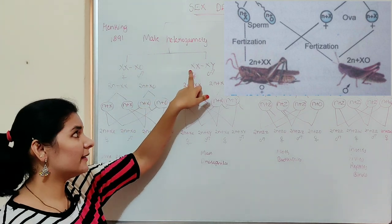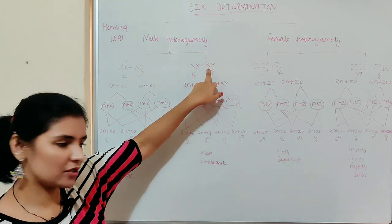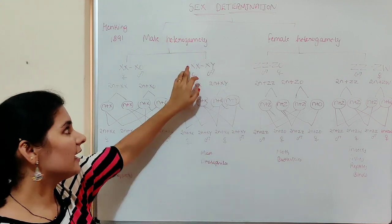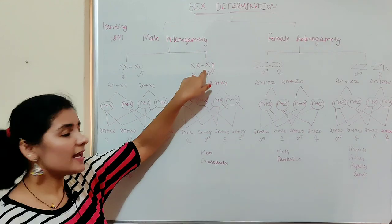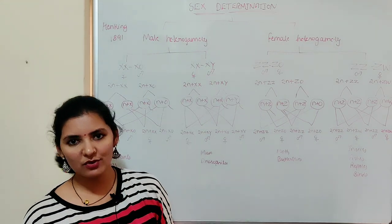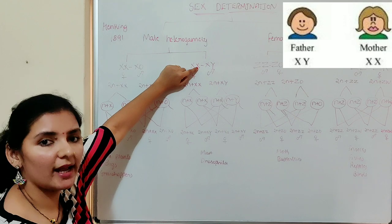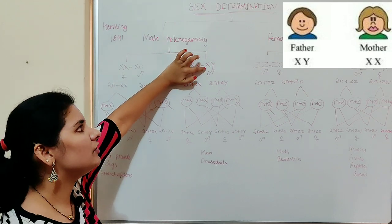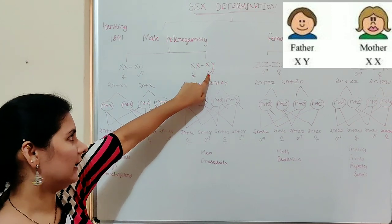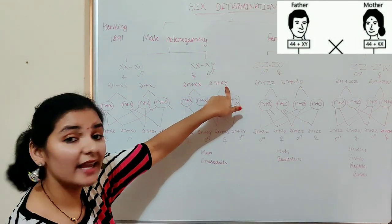The second type under male heterogamety is XX/XY type of sex determination. This type is seen in humans as well as in Drosophila melanogaster. As it is a type of male heterogamety, the male produces two different types of gametes. Individuals having XX chromosomes are females, and individuals having XY chromosomes are males. The genotype of the female is 2N + XX and the genotype of the male is 2N + XY.